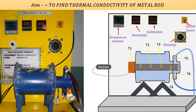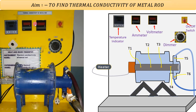Adjacent to the voltmeter, we have an ammeter, which measures the flow rate of current. Then adjacent to the ammeter, we have a temperature indicator which measures temperature.